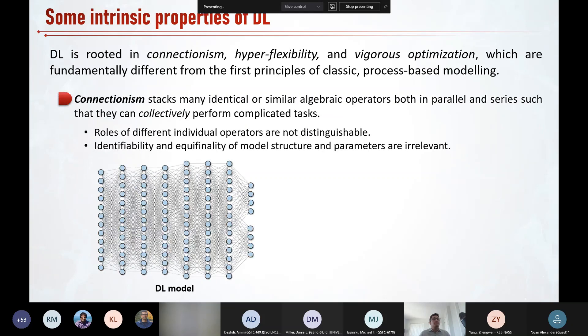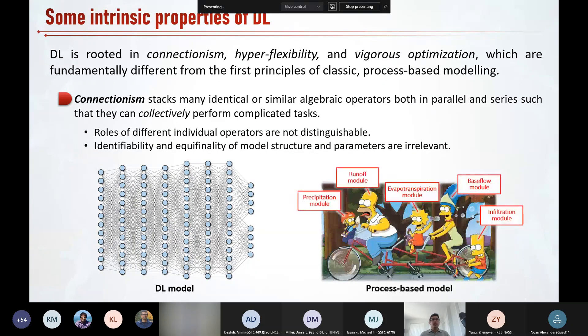What is connectionism? Connectionism is an approach that stacks many identical or similar algebraic operators both in parallel and in series such that they can collectively perform complicated tasks. In this approach, the role and functions of different individual operators in producing the model response are not distinguishable. And of course, it is unlike the modular approach, typically adapted in process based modeling where each module of a model is designed to represent some process. And the relationship of the modules are clear to the modeler and ultimately all these modules work and interact to achieve some goal. As a result, considerations of identifiability and equifinality of model structure and parameters become irrelevant in deep learning.